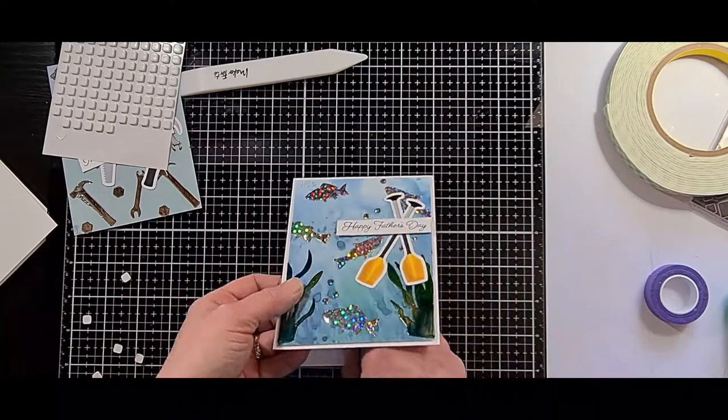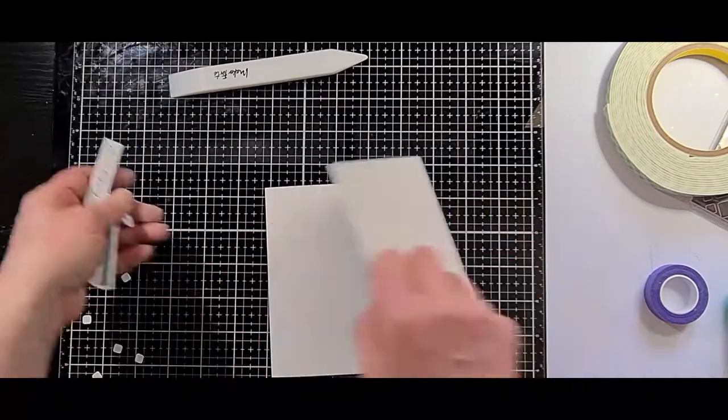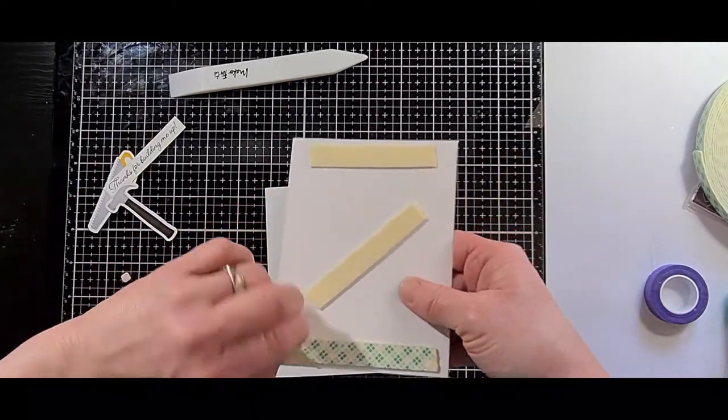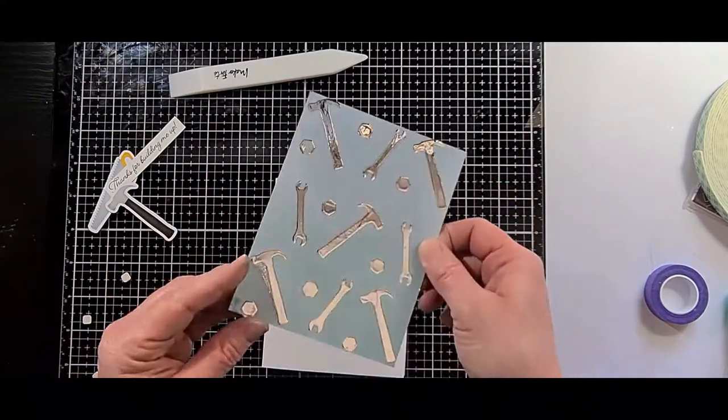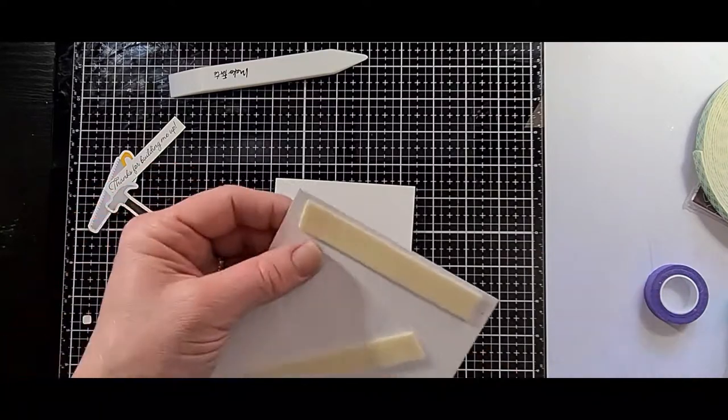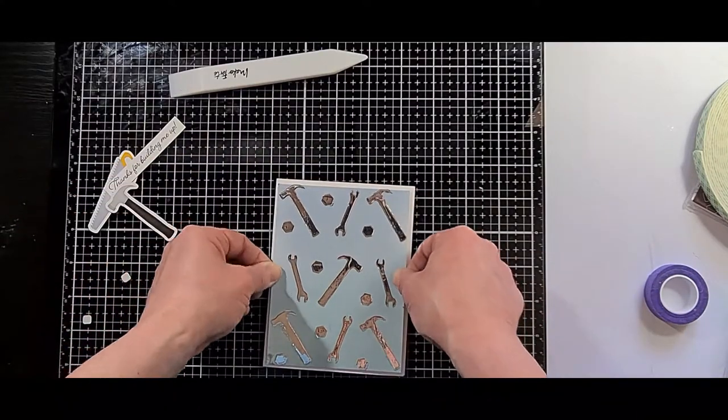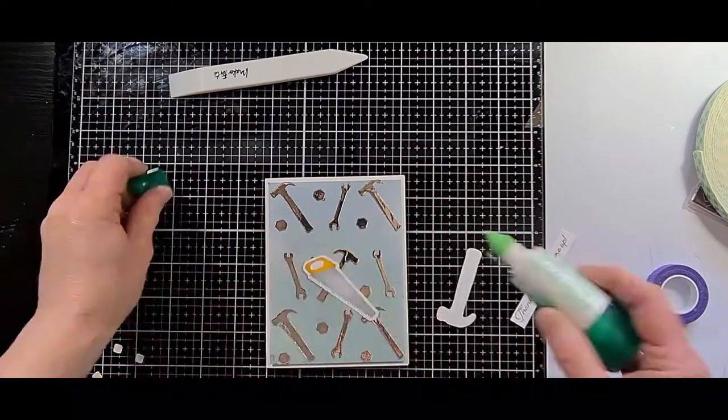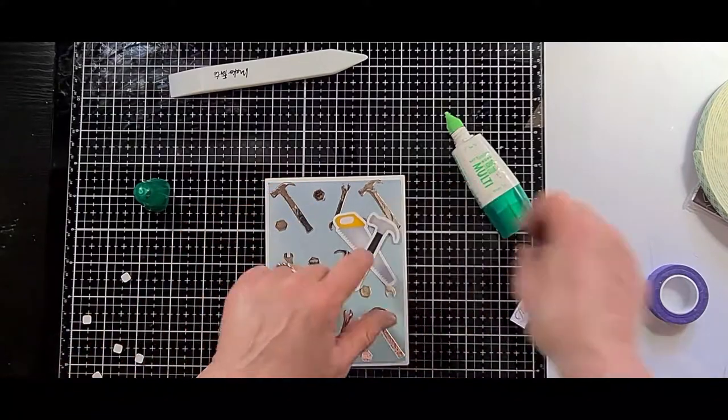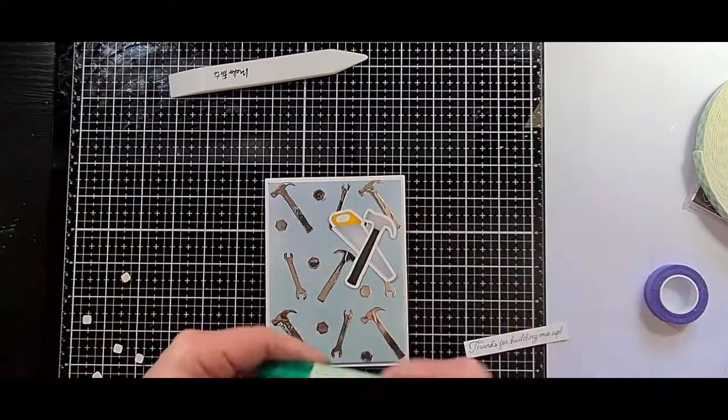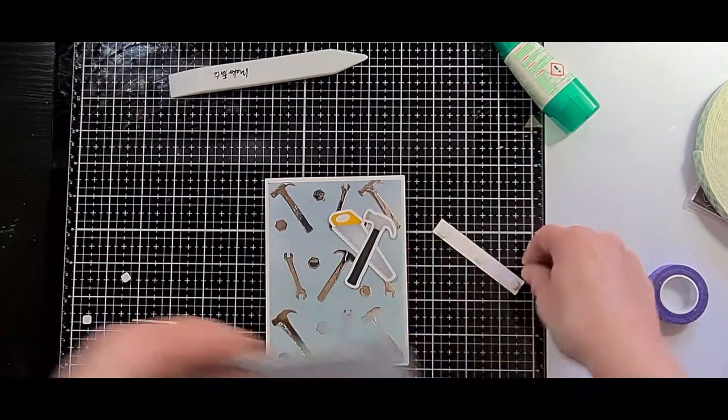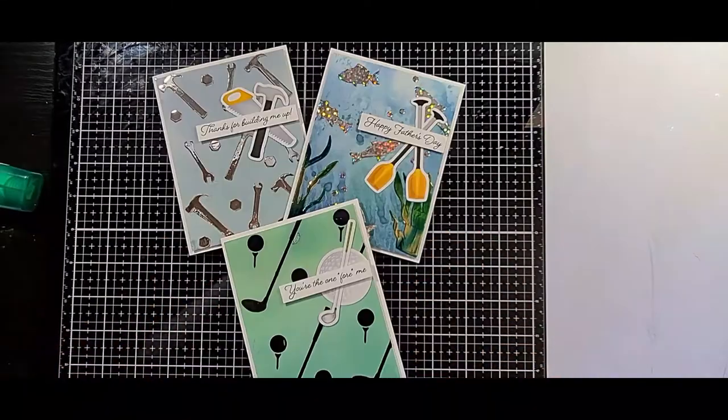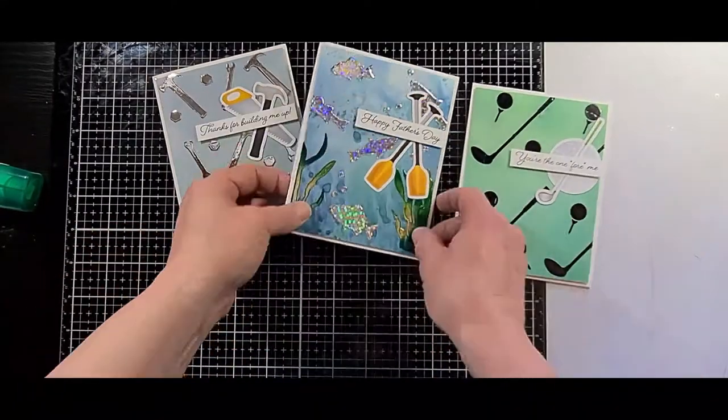They're perfect for any men in your life, or even any women that love golfing, fishing, building things, and being handy. They're perfect for more than just men. So I added them all to my card bases. I have two top folding and one side folding card bases from 110 pound heavyweight card stock. And I absolutely love how these cards turned out. They are perfect for Father's Day, perfect for birthdays. This box and all of the contents in it, all the masculine theme stamps and images are fantastic.